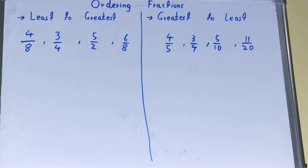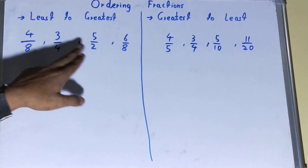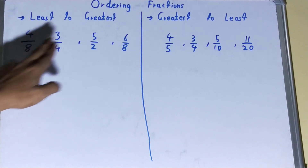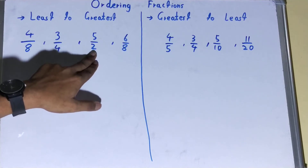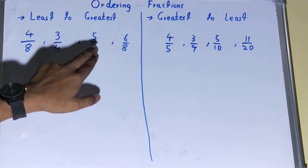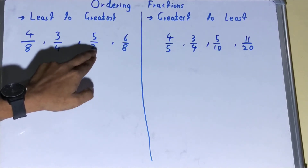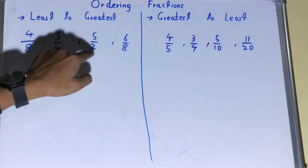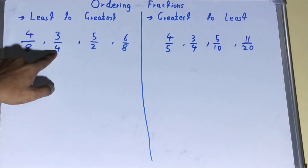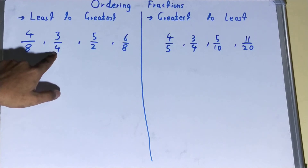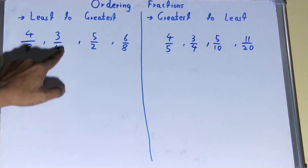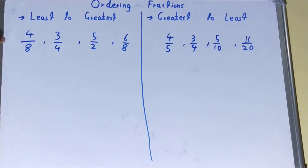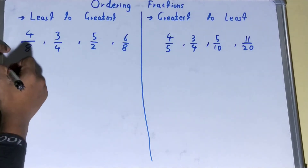We can check the multiples: two ones are 2, two twos are 4, two threes are 6, two fours are 8 — so we can get 8. For 4: four ones are 4, four twos are 8 — so we can also make 8. So we'll make all the fractions have a denominator of 8.